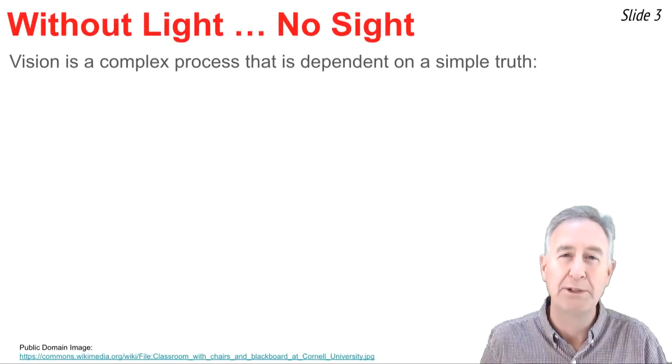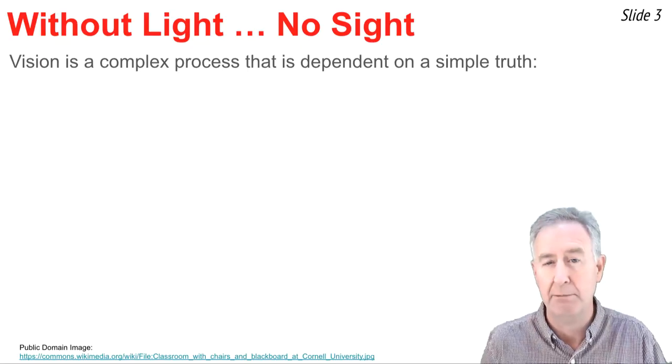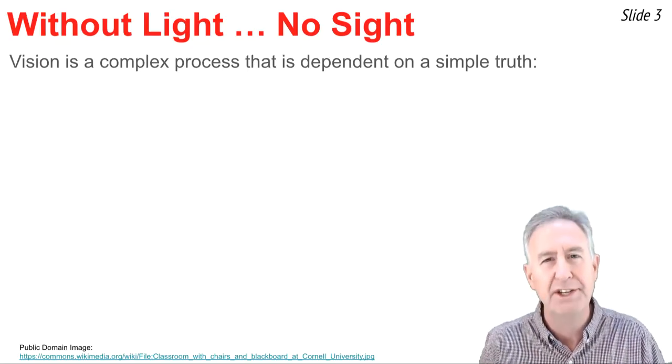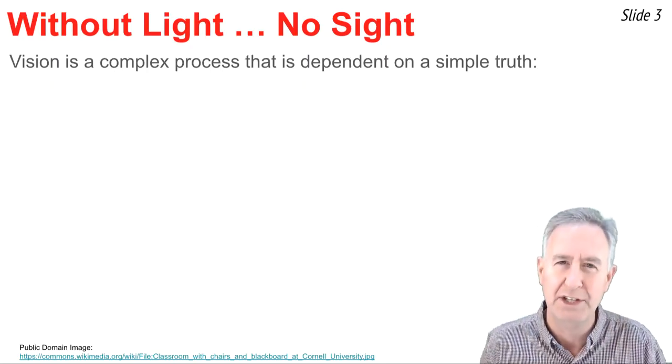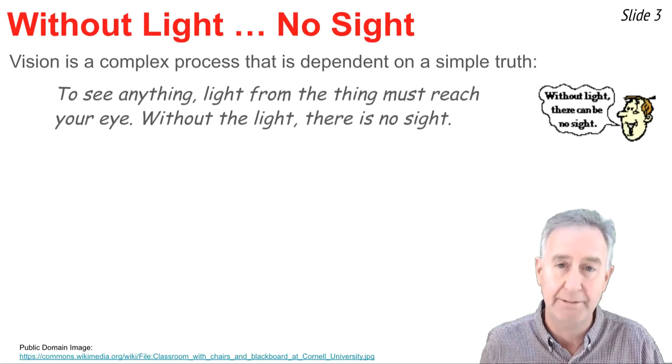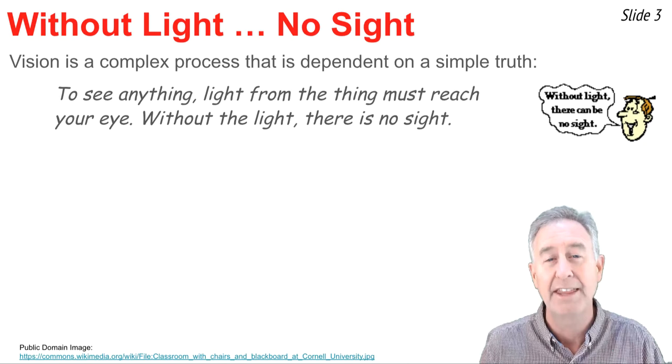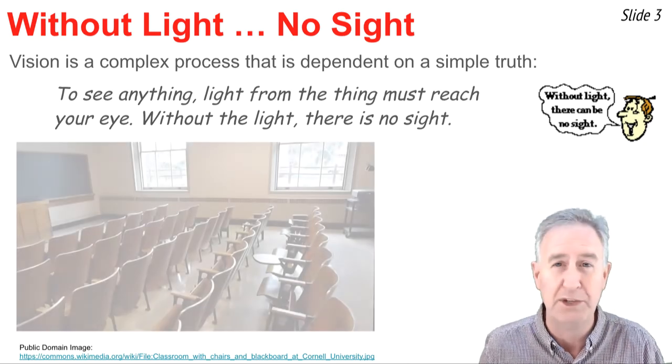Vision, or how humans see, is a very complex topic, but lying at the foundation of the process of vision is a very simple truth that goes like this. In order to see anything, light from the thing must come to your eye. That is, without light, there can be no sight.